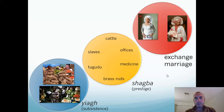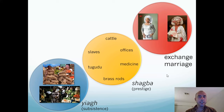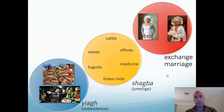There were also slaves in this sphere — not chattel slavery like in the transatlantic slave trade, but more likely indentured servitude. Also in the prestige sphere was 'to guru,' a type of white cloth that was apparently quite prestigious, and then brass rods, which served as a medium of exchange within this sphere.